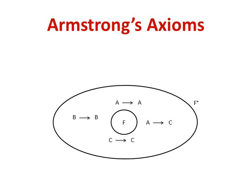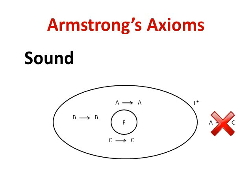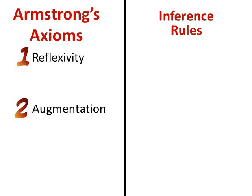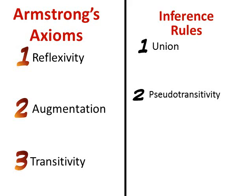One aspect of Armstrong axioms is that they are sound. This means that if we have a set of functional dependencies F and apply Armstrong's axioms, we will not find any functional dependencies that go outside F closure — we only find things inside F closure. Another aspect is that they are complete, meaning if we apply Armstrong's axioms to F, we are going to find all the functional dependency sets that exist. From the three Armstrong axioms — reflexivity, augmentation, and transitivity — we can derive three inference rules: the union rule, pseudotransitivity, and decomposition.